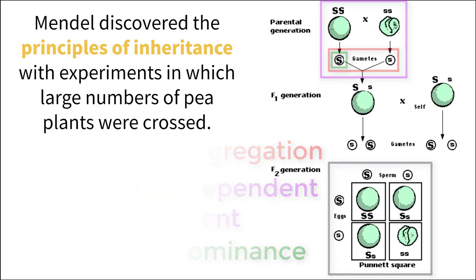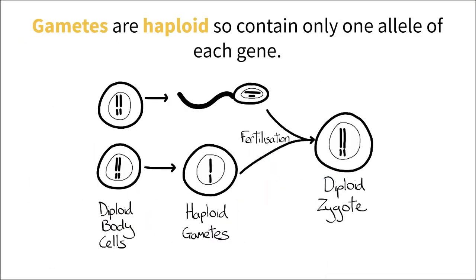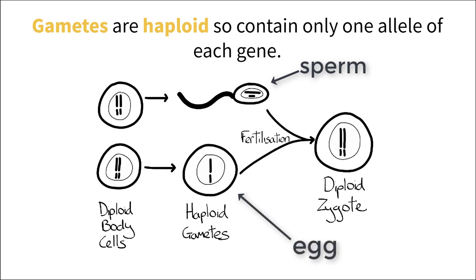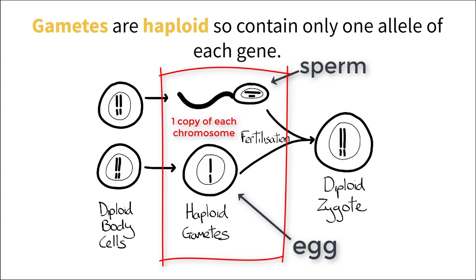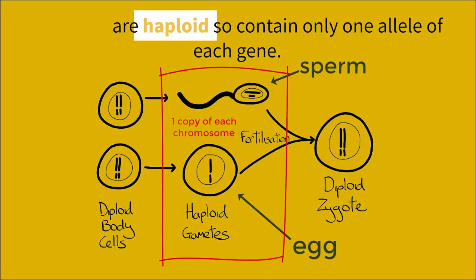A gamete is a fancy word for an organism's reproductive cells. Looking at humans specifically, males produce sperm cells and females produce ovas, or egg cells. Both of these cells are classified as gametes and, according to Mendel's first law, have segregated DNA so that each cell carries only one copy of each gene. Because these cells carry half of the amount of DNA as a normal body cell, we call them haploid.